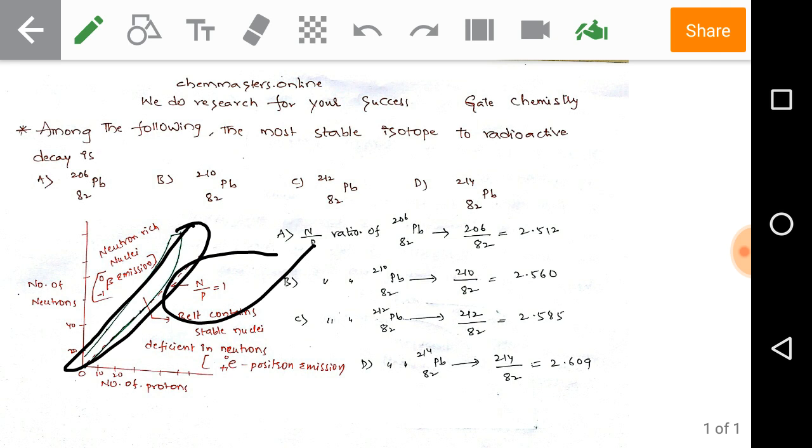If the nucleus has more neutrons compared to protons, then the neutron to proton ratio will be more than one, and those nuclei are less stable or unstable. This leads to beta emission.